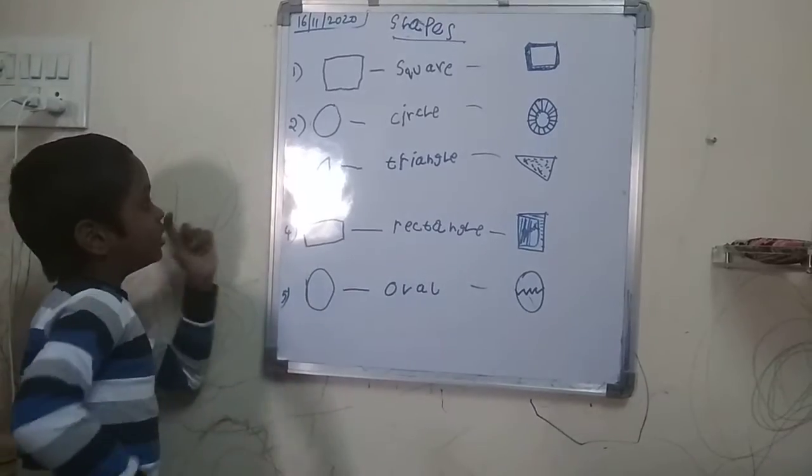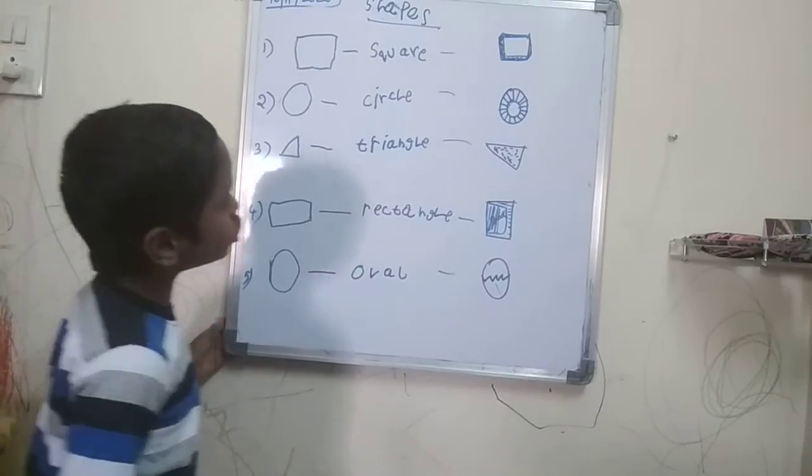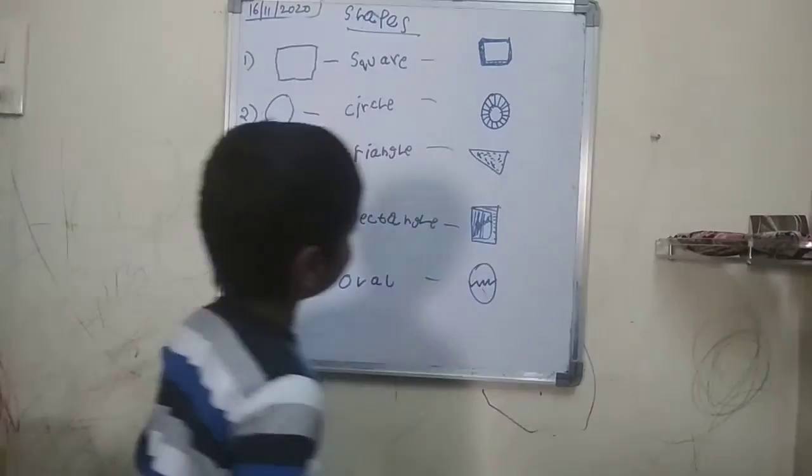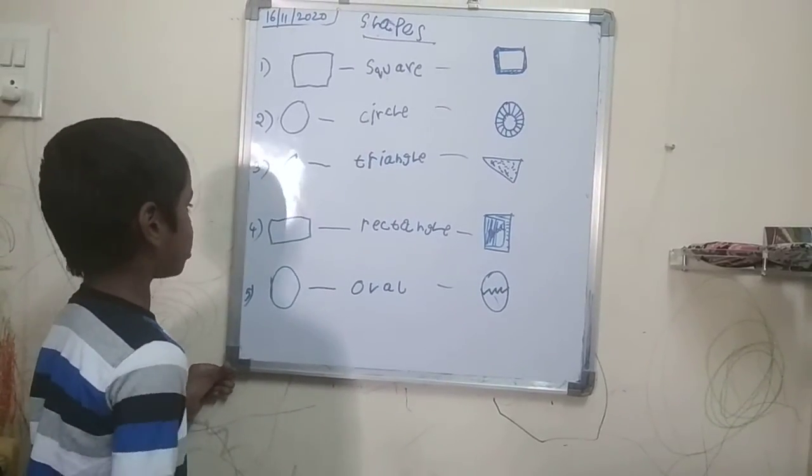Next one. We are going to the triangle. A triangle has three sides. It looks like a pizza. You can eat it. Next one.